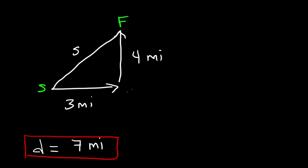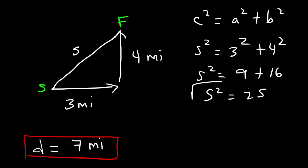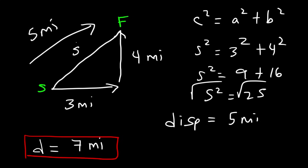We need to use the Pythagorean theorem. C squared equals A squared plus B squared, so S squared equals 3 squared plus 4 squared, which is 9 plus 16, adding up to 25. The displacement is the square root of 25, which is 5. The net effect is the person traveled 5 miles in that direction, even though he actually walked a distance of 7 miles. The displacement is the distance between your final position and the initial position.